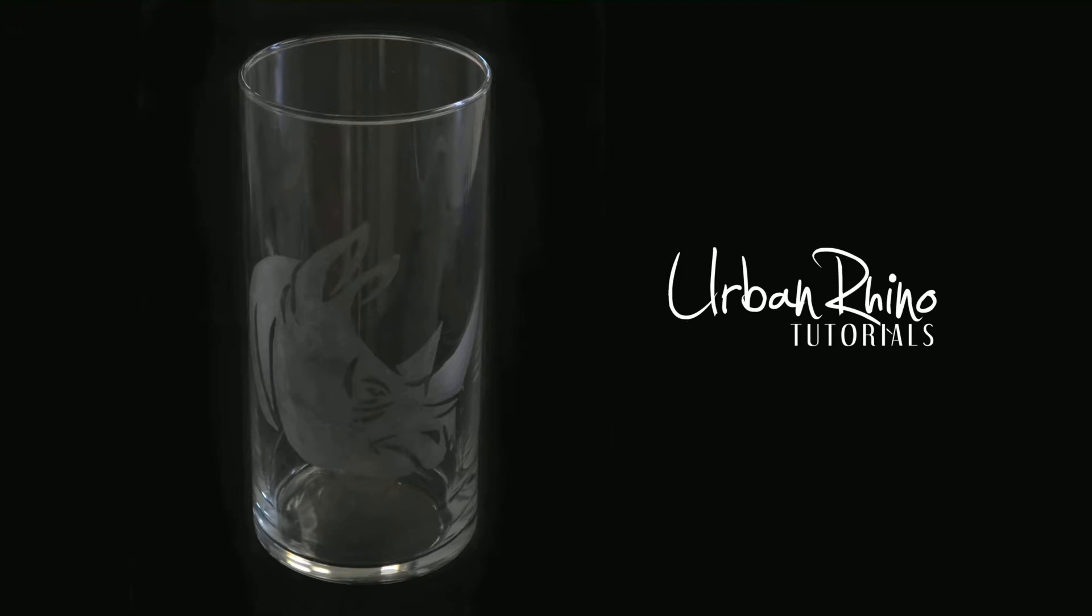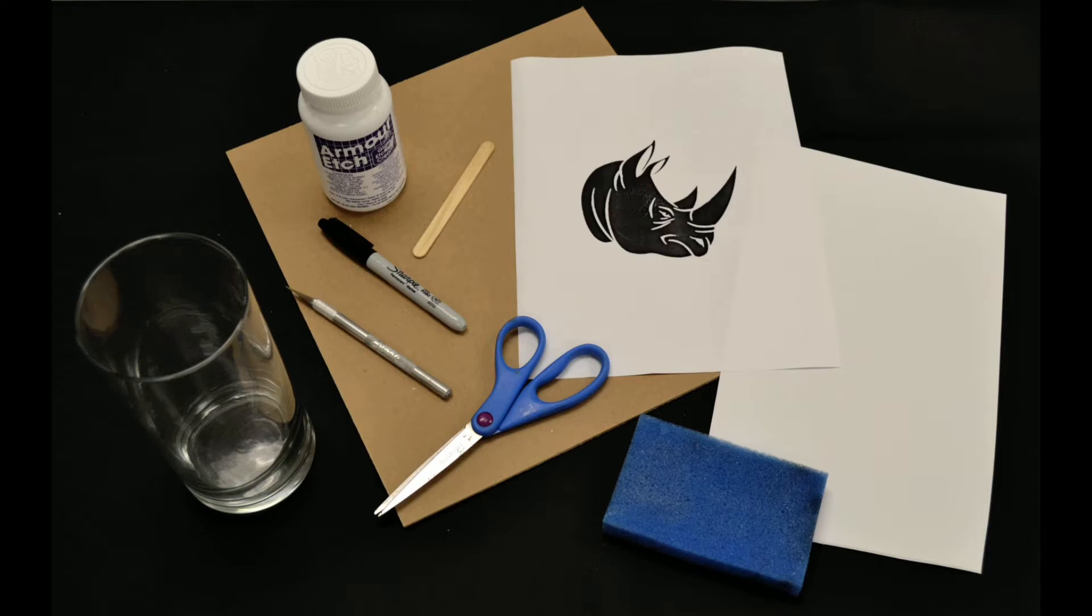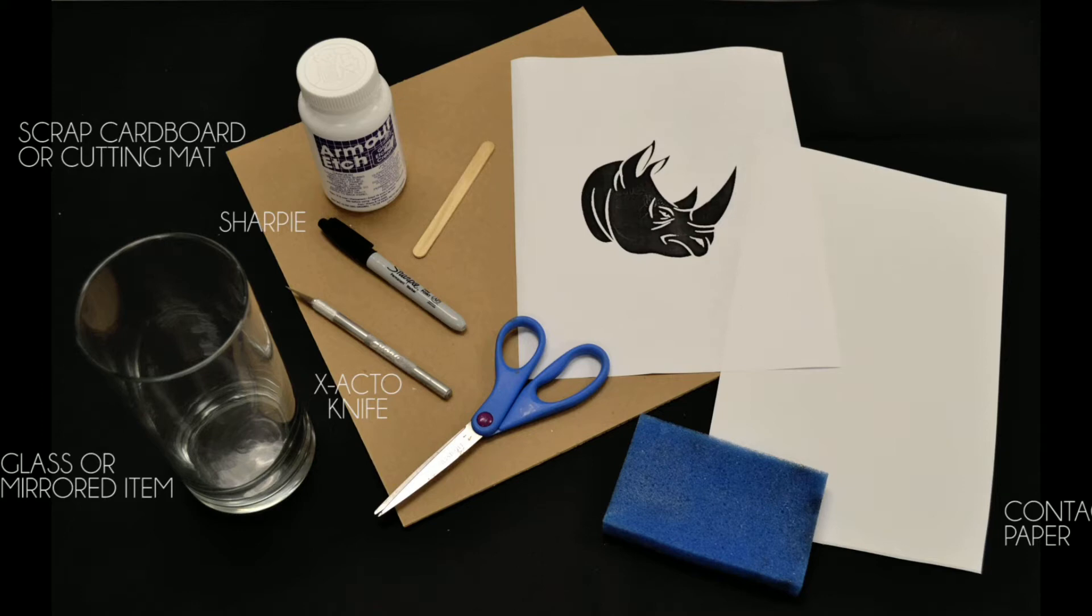Today in this tutorial I'm going to show you how to do a glass etching. For this project you'll need a glass or mirrored item, contact paper, an exacto knife, a sharpie, a scrap piece of cardboard to cut on, etching cream (I use Armor Etch which works best), a popsicle stick, a sponge, scissors, and of course your design.